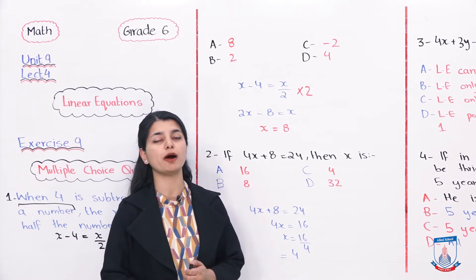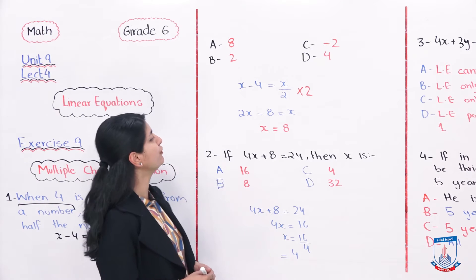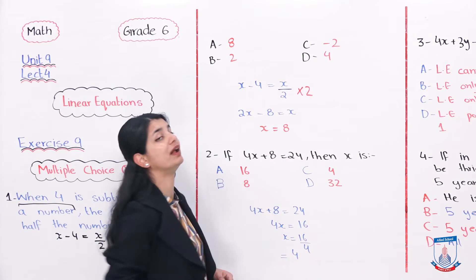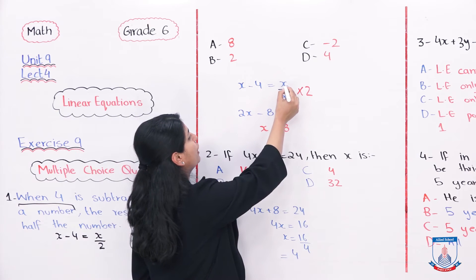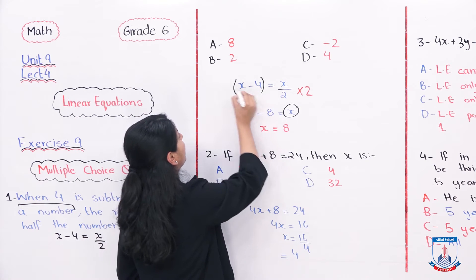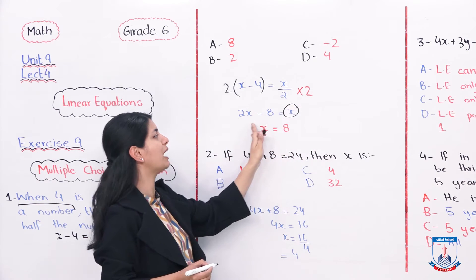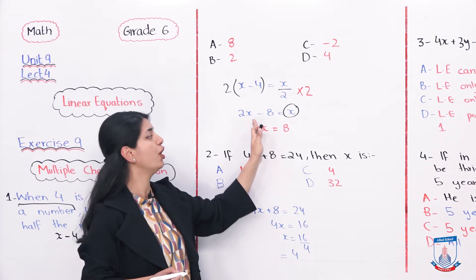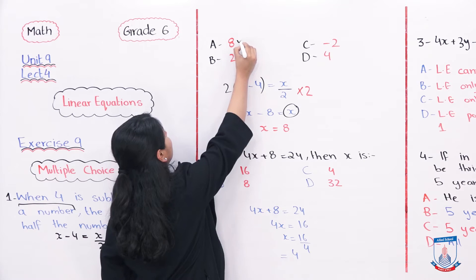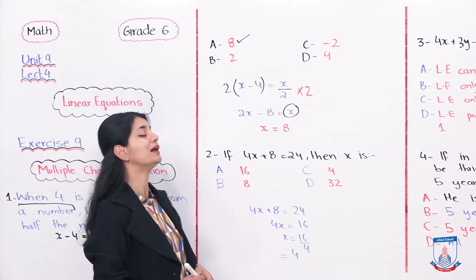Now let's solve it. The options are: A is 8, B is 2, C is minus 2, and D is 4. We have x minus 4 equals x divided by 2. Multiplying both sides by 2 gives us 2x minus 8 equals x. Rearranging, we get x equals 8. So the answer is Option A, which is 8.